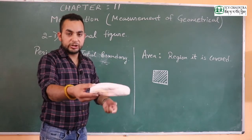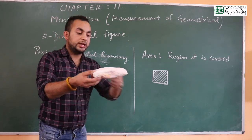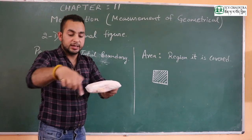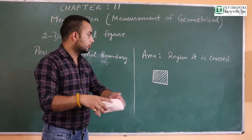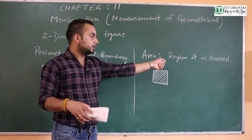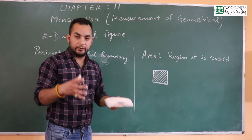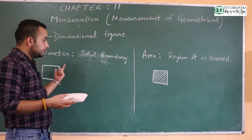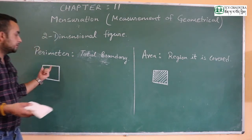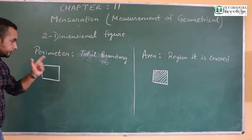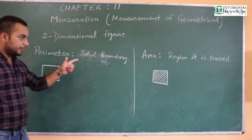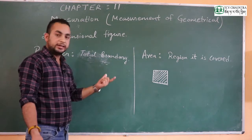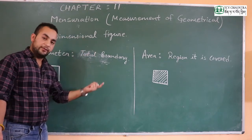For example, if I take a duster and place it on a table, how much surface that duster will cover — that is known as area. So that is the difference between perimeter and area: perimeter means the total boundary of that figure, and area means the region it covers.